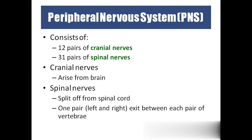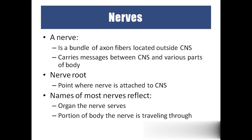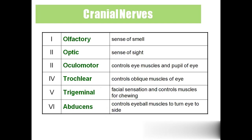Coming to the peripheral nervous system: all nerves coming out of the brain and spinal cord form the peripheral nervous system. From the brain we have 12 pairs of cranial nerves, and from the spinal cord we have 31 pairs of spinal nerves. Cranial nerves arise from the brain and spinal nerves come from the spinal cord — one from the right and one from the left making each pair. The point at which nerves come out is called the nerve root. Nerves are usually named based on the organs they supply.